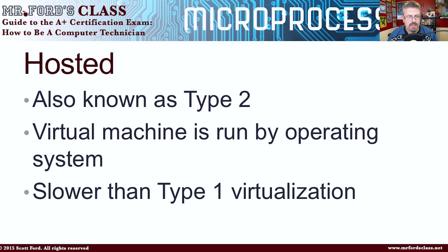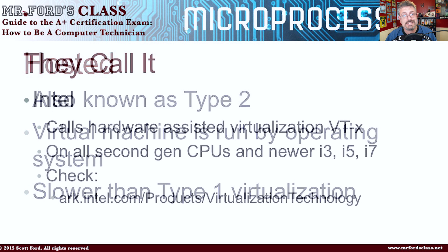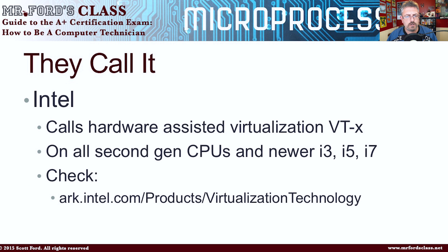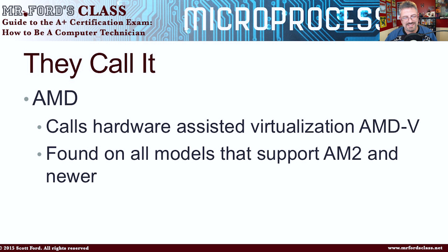We have native and hosted virtualization. There are different names for the hardware virtualization support. Intel calls their hardware-assisted virtualization VT-x, found in all second-gen CPUs and the newer i3, i5, and i7s. I've put a link in the description where you can check if your CPU is supported. AMD has their own name for this — they call it AMD-V, found in all models that support AMD's newer CPUs.